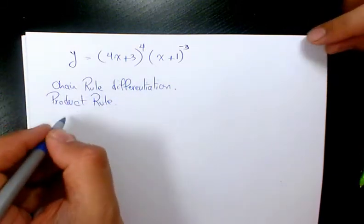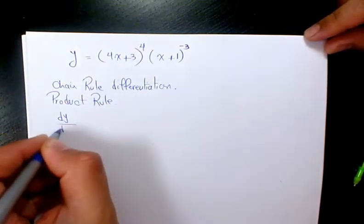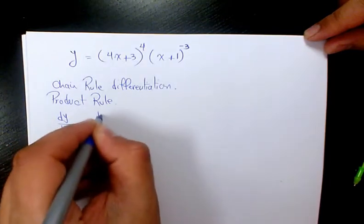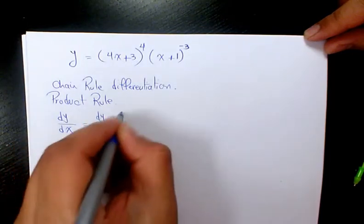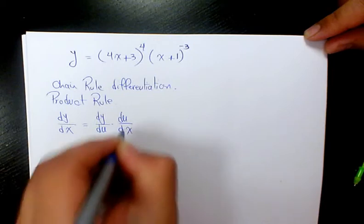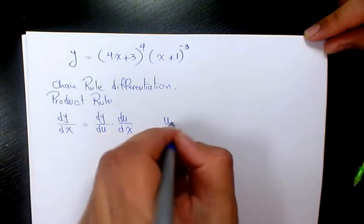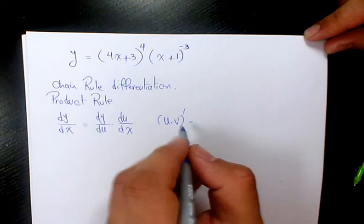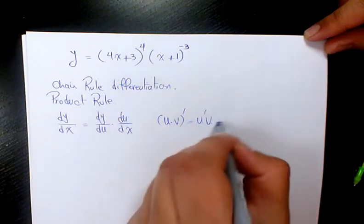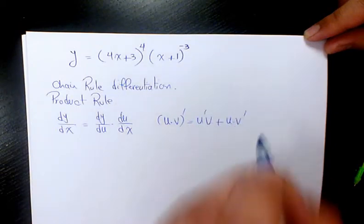Chain rule differentiation says that dy/dx equals dy/du times du/dx. And the product rule says that the derivative of uv is u'v plus uv'.